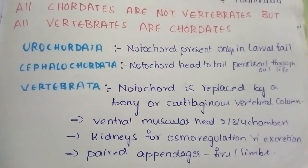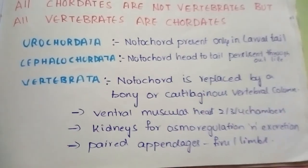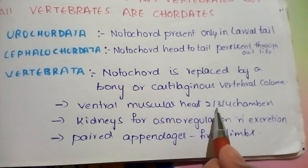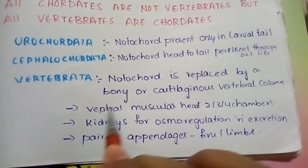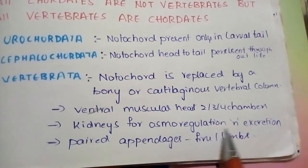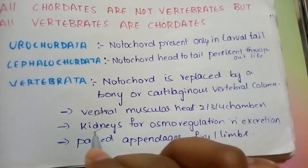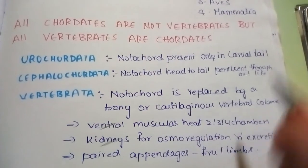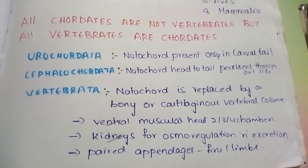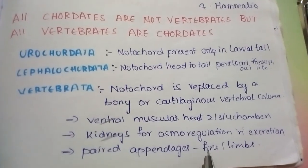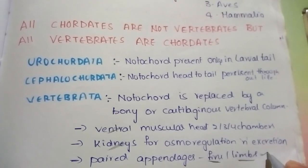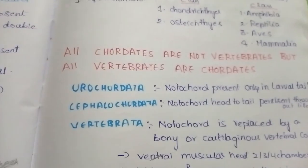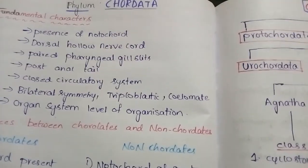There are some important features common to vertebrates. They have a ventral muscular heart with two, three, or four chambers. Kidneys are present for osmoregulation and excretion.